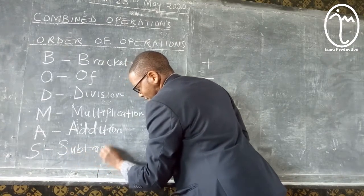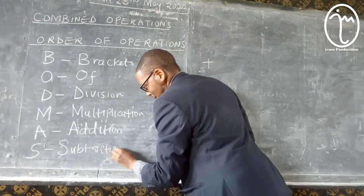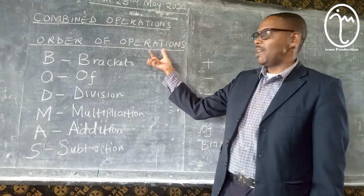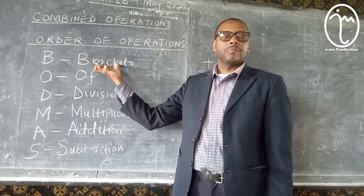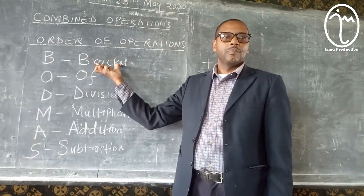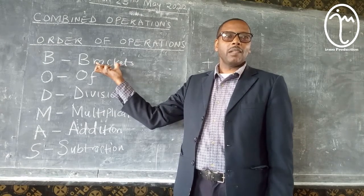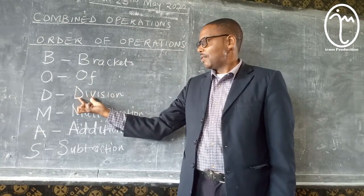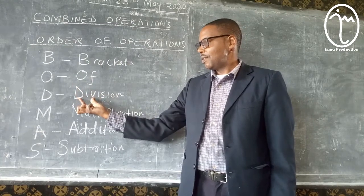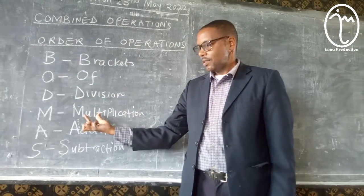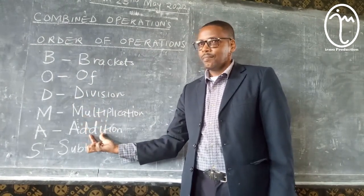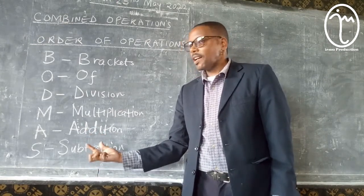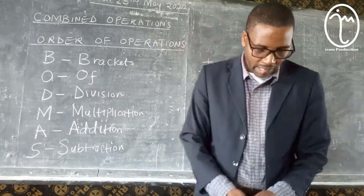I am trying to understand it. So this is the order of operations. When we are doing mathematics, we always start with Brackets, Of, Division, Multiplication, Addition, and Subtraction counts last.